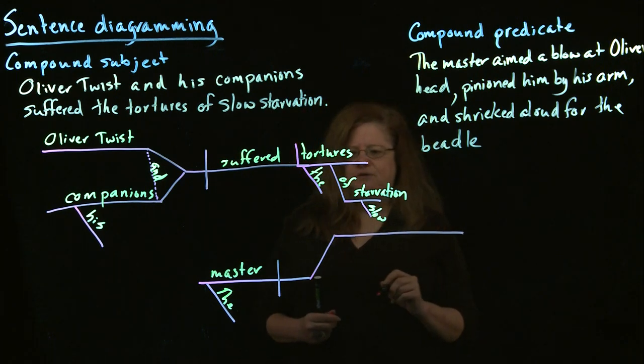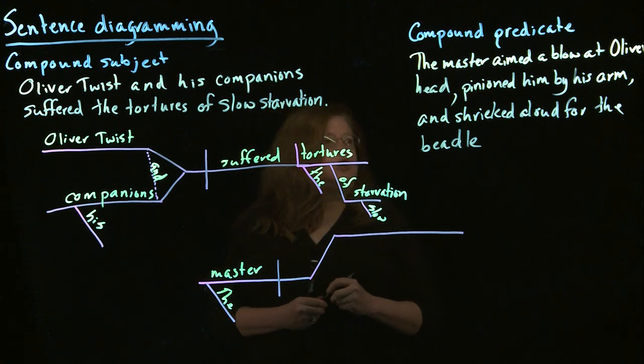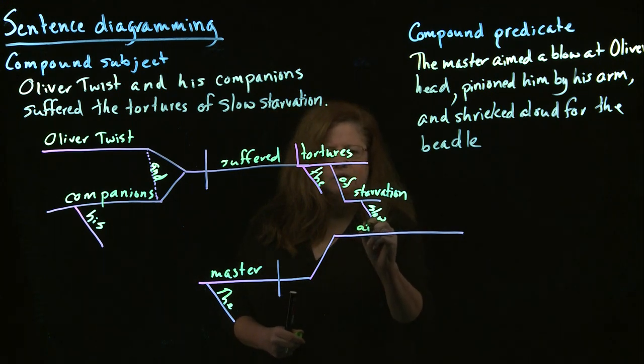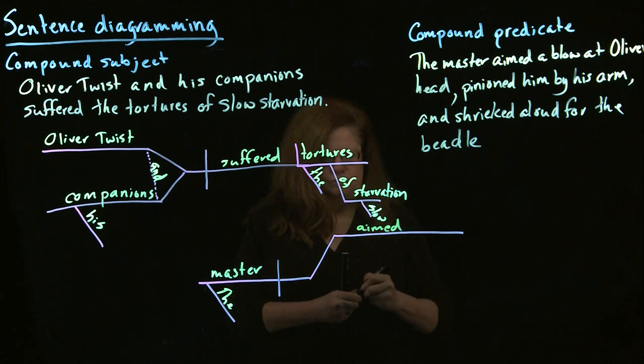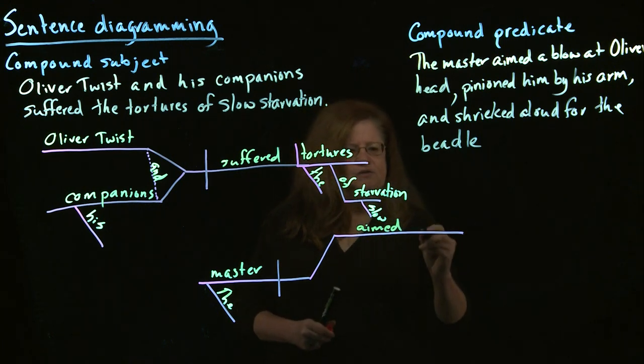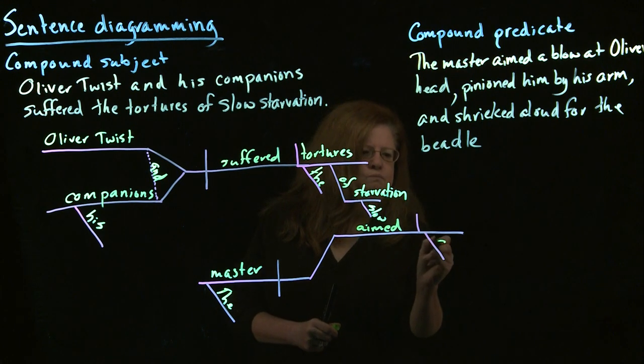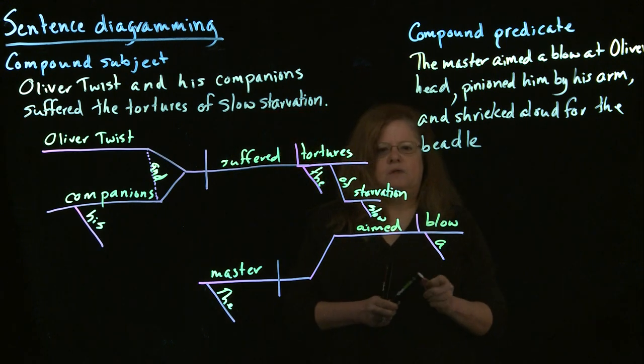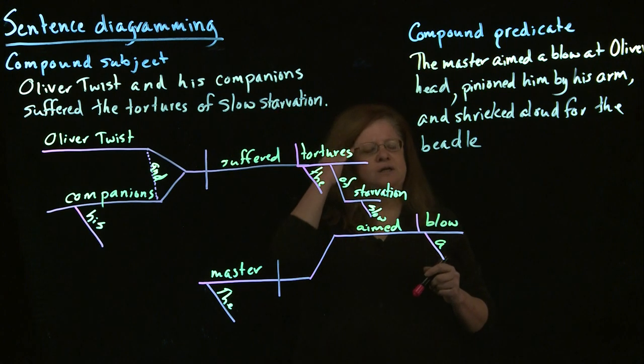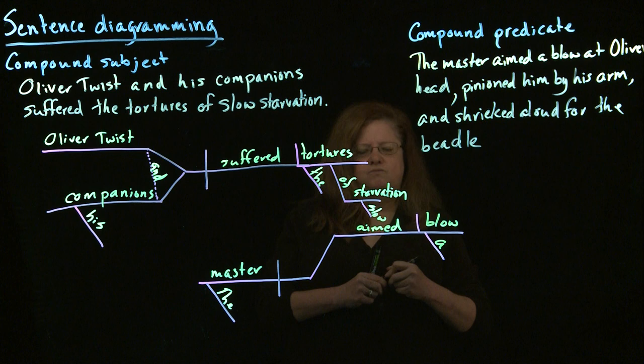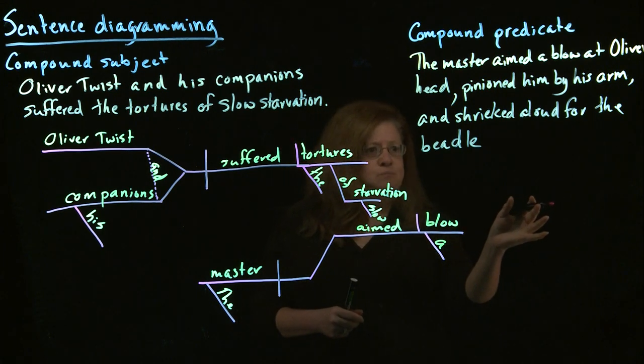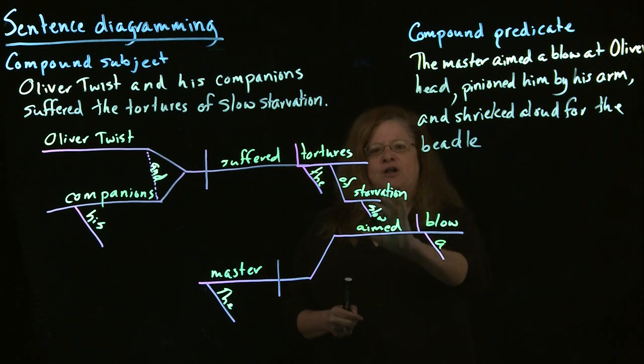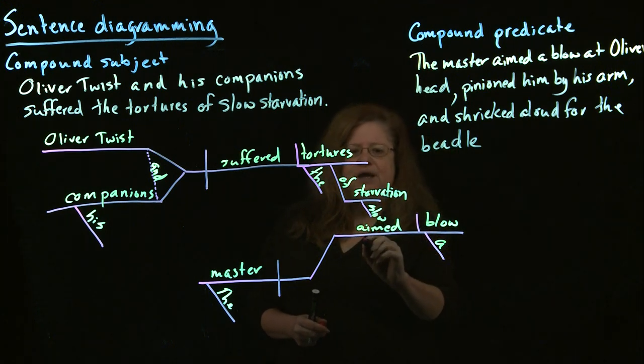In this case, we actually have three of them. So we have that he aimed. And we have a direct object, a blow, at Oliver's head. And it's aimed is what's being done at Oliver's head. So we're modifying our verb aimed.